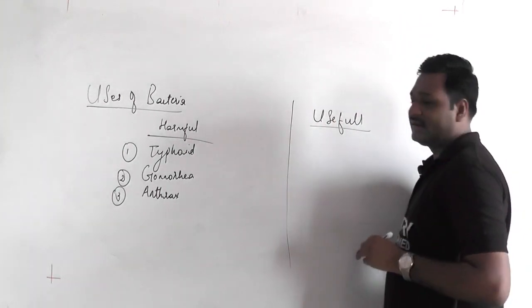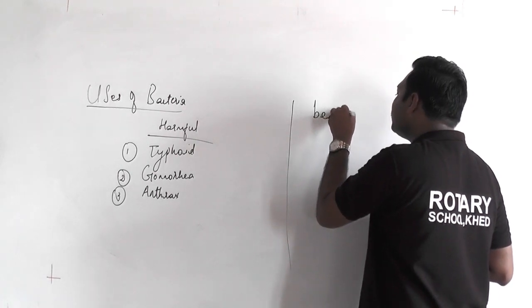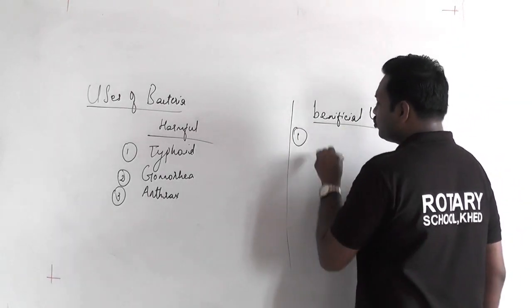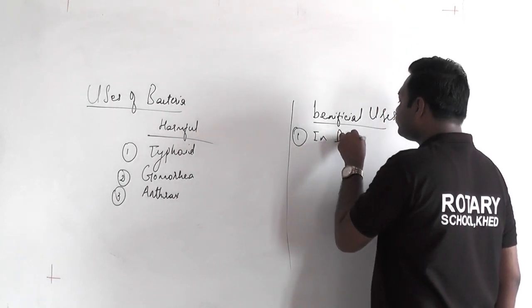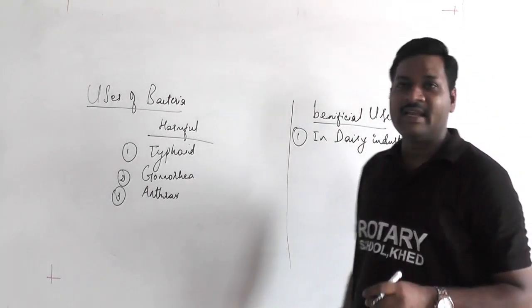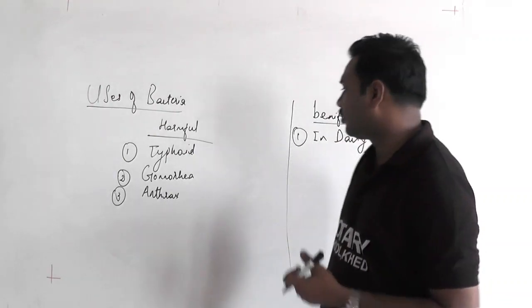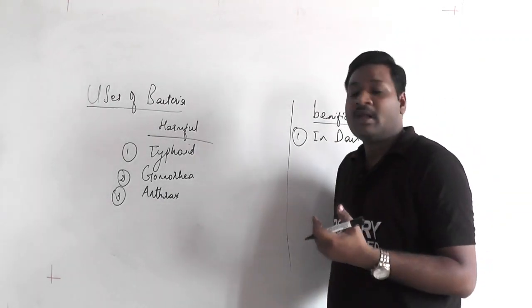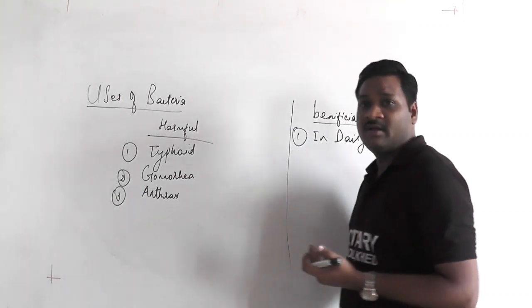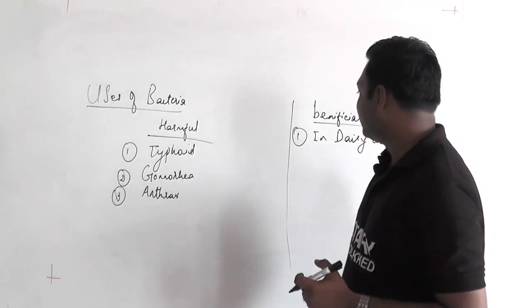For beneficial uses of bacteria: first, they are used in the dairy industry for production of dairy products. Lactic acid bacteria convert milk into dairy products. Examples include curd and yogurt. Cheese is also produced by bacteria — for instance, Propionibacterium shermanii is the bacterium used in the production of cheese.